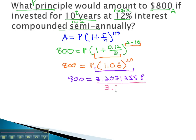When we divide by 3.2071355 on both sides, we end up getting our P alone. The investment we need to have $800 after 10 years is merely $249.44.